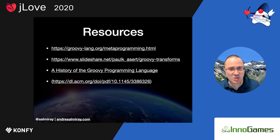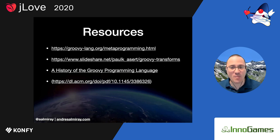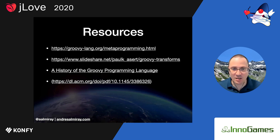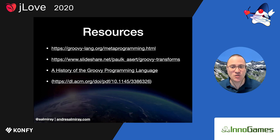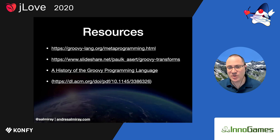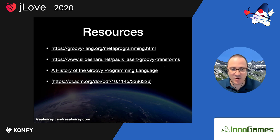I leave you with a few resources. The first link is a detailed description of all metaprogramming aspects in Groovy, both dynamic runtime and static compile-time — it contains a list of all local and global transformations, categories, mixins, traits, extension methods, macros, and everything we saw today plus more. There is a presentation by Paul King, the current PMC of Apache Groovy, that goes further into how to implement your own AST transformations. And the history of the Groovy programming language shows the evolution including the AST framework.